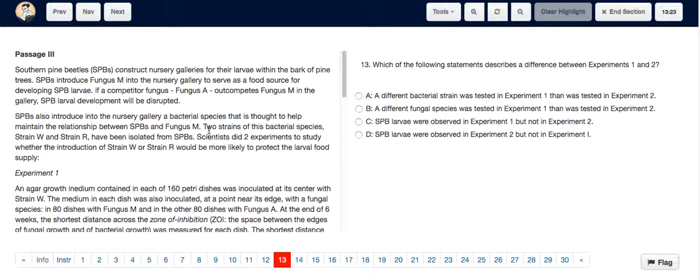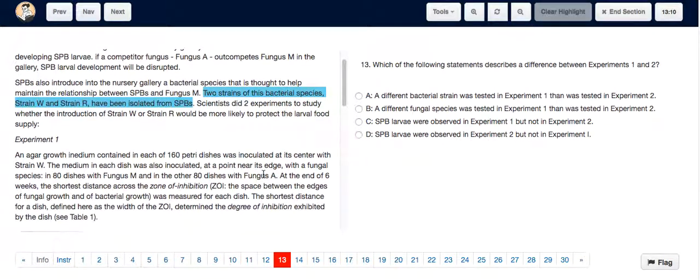For question 13, first we note that in the description of the experiment we've been told two strains of the bacterial species, strain W and strain R, have been isolated from SPBs. SPBs are southern pine beetles, so we know that strain W and strain R are two different strains of bacterial species.